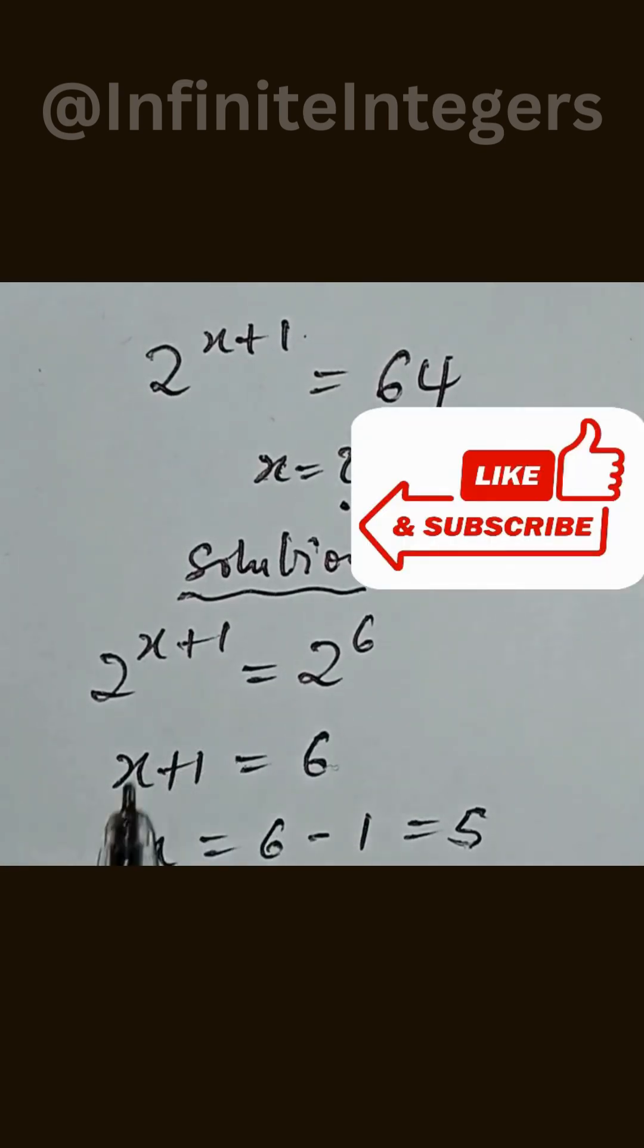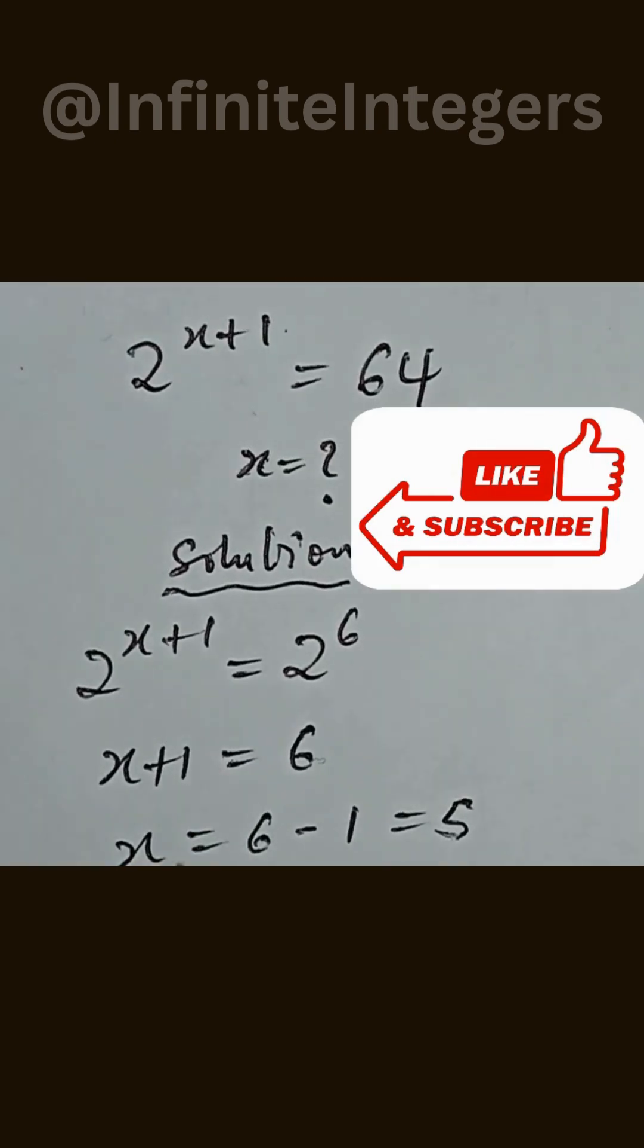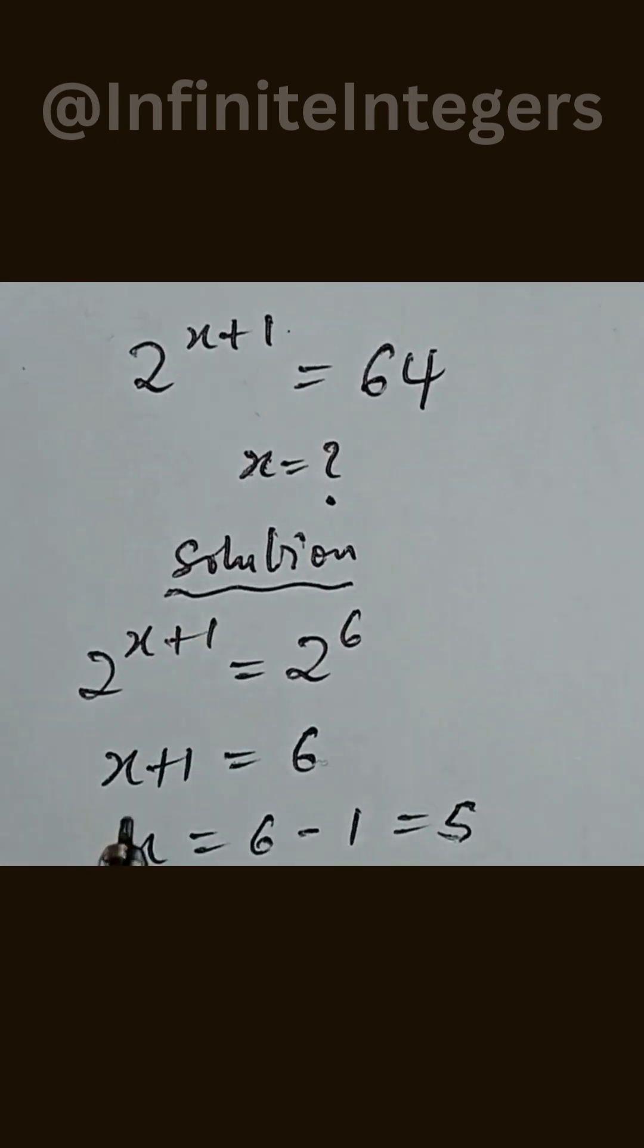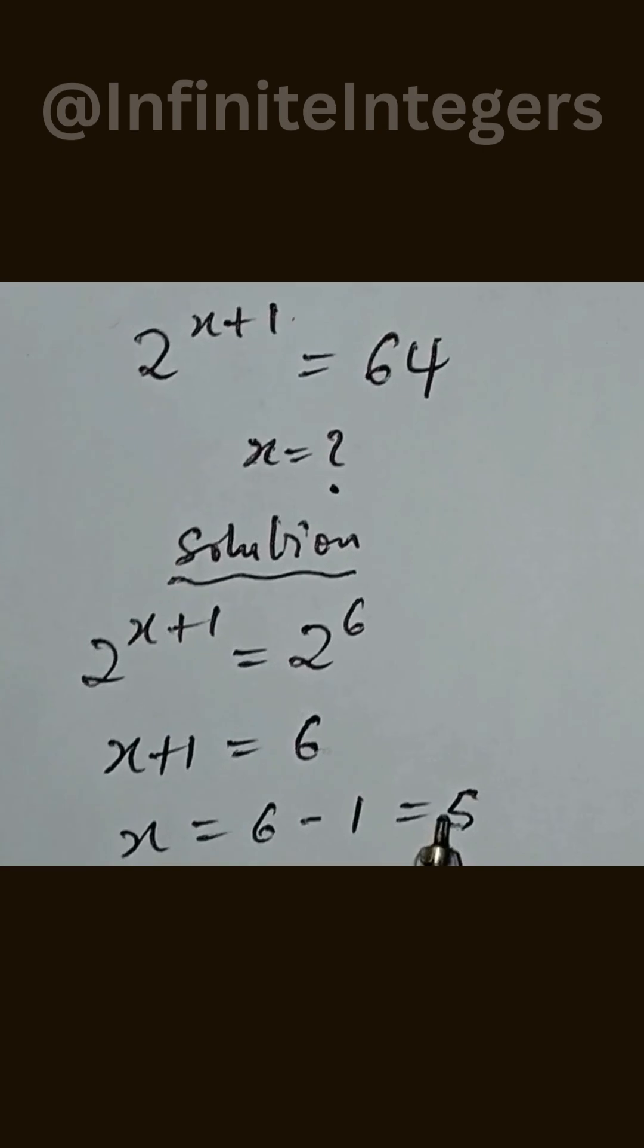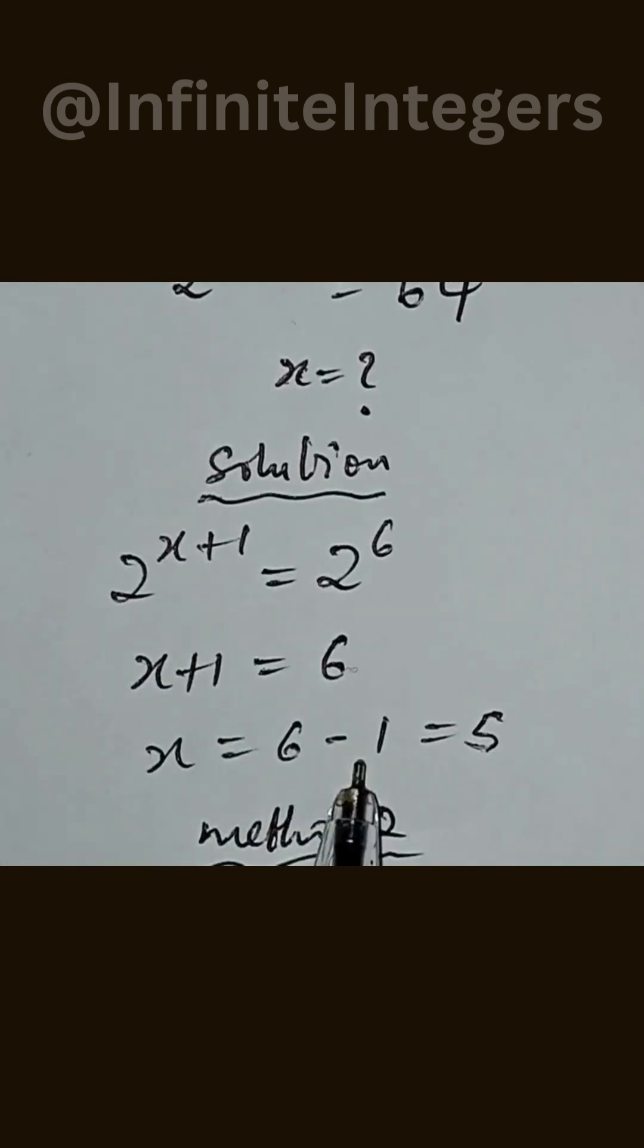so we take out the base and equate the exponents. So we have x plus 1 equal to 6. We move the 1 to the right hand side, it becomes minus. So we now subtract 1 from 6, then we have 5.